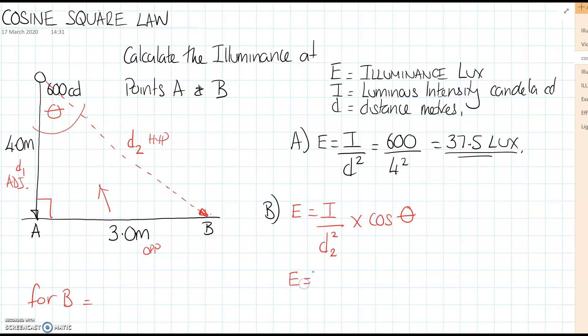That's going to be, in this case, 600. The distance - we need to work D2 out. So let's work out D2. D2 is, using Pythagoras: 3 squared plus 4 squared, square rooted, is 5 meters.